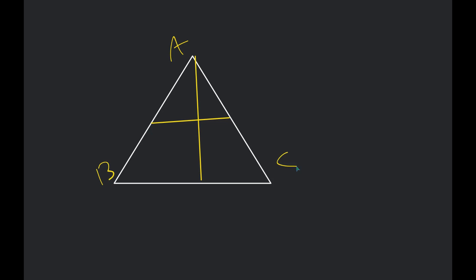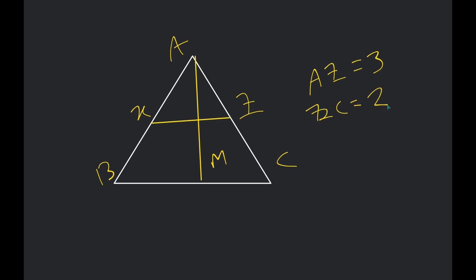If there is any more doubt you can ask me. So that is X and Z, correct? As per the question, AZ is equal to three centimeters and ZC is equal to two centimeters, right? And MC is equal to five centimeters.